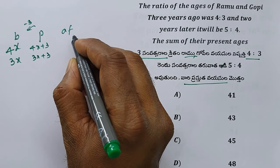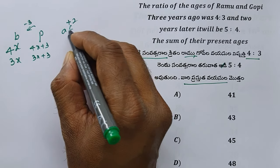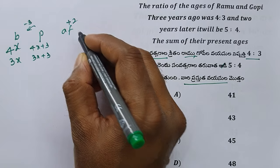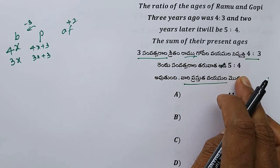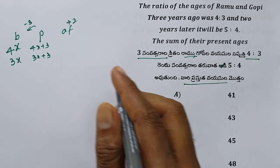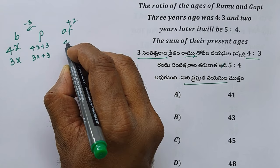5 is to 4. After 2 years, let's look at the ratio after 3 years.